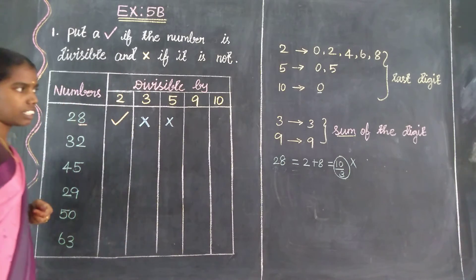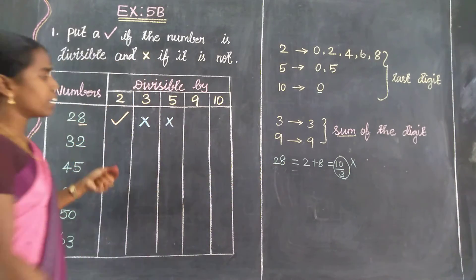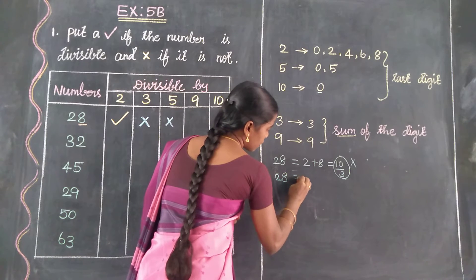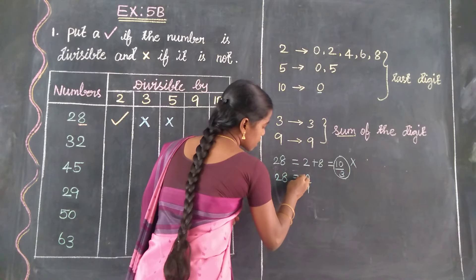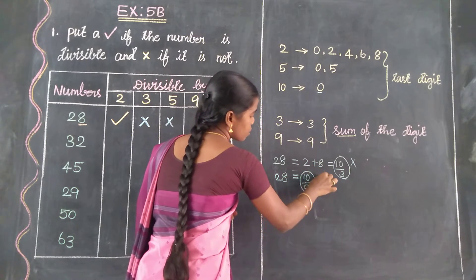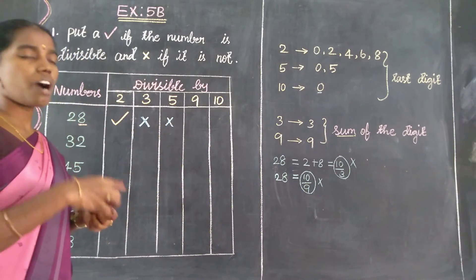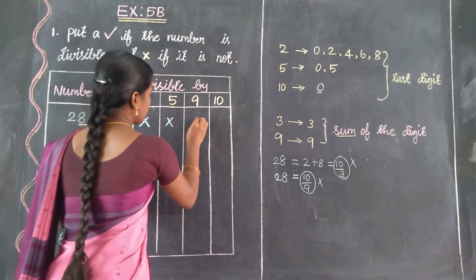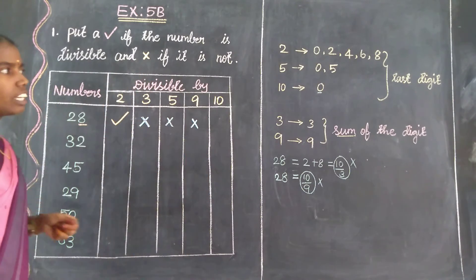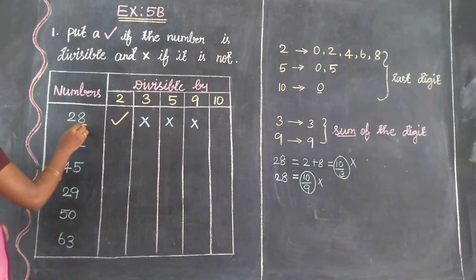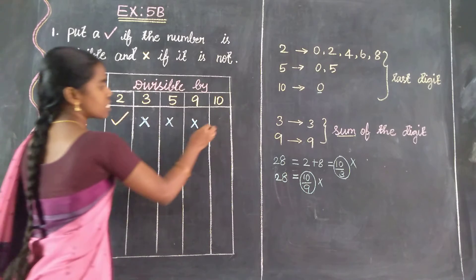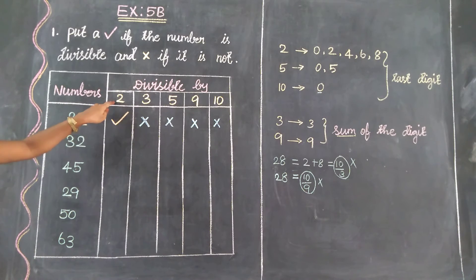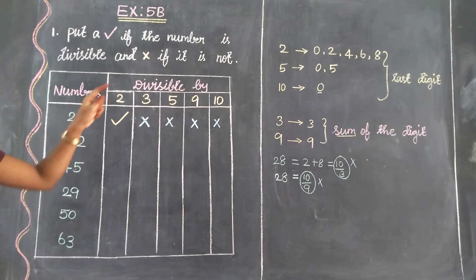Next, divisibility by 9. The rule for 9 is: sum of the digits. The sum of digits of 28 is 10. Is 10 divisible by 9? No — 1 nine is 9 and 2 nines are 18, so 10 is not divisible by 9. Therefore 28 is not divisible by 9. For 10, the rule is: last digit must be 0. The last digit of 28 is 8, so it is not divisible by 10. Summary: 28 is only divisible by 2. It is not divisible by 3, 5, 9, or 10.